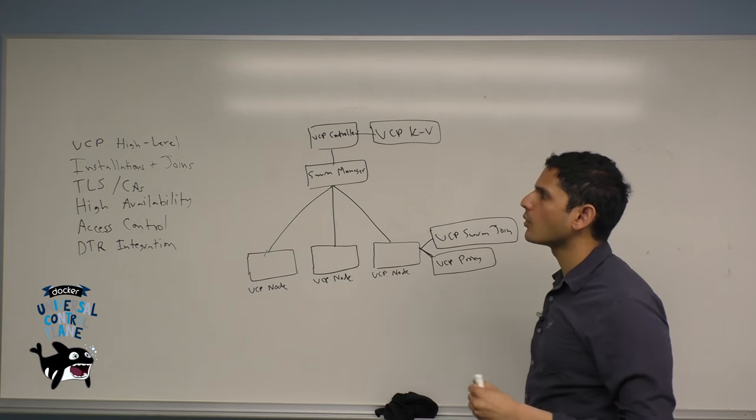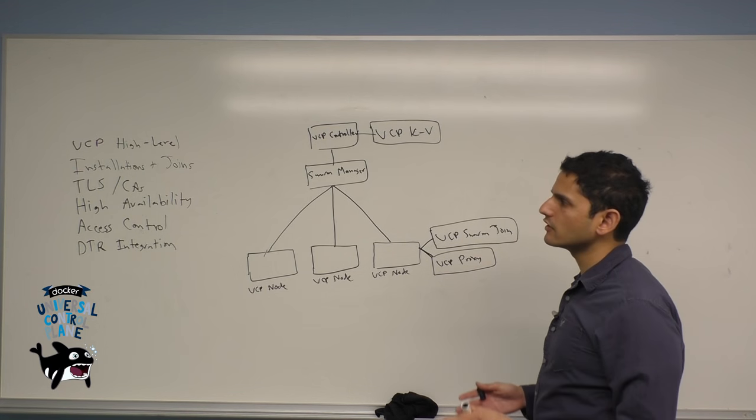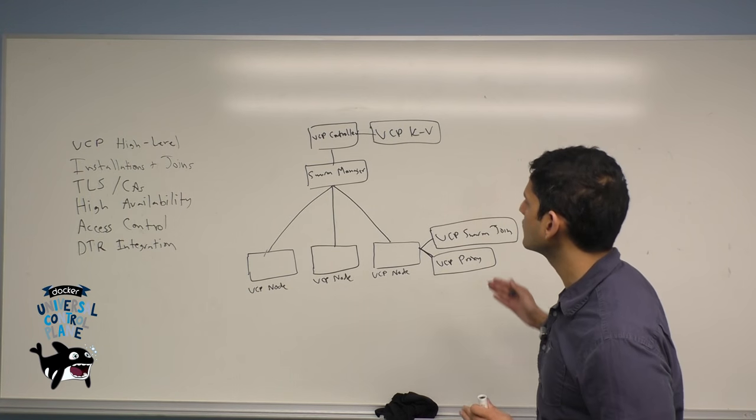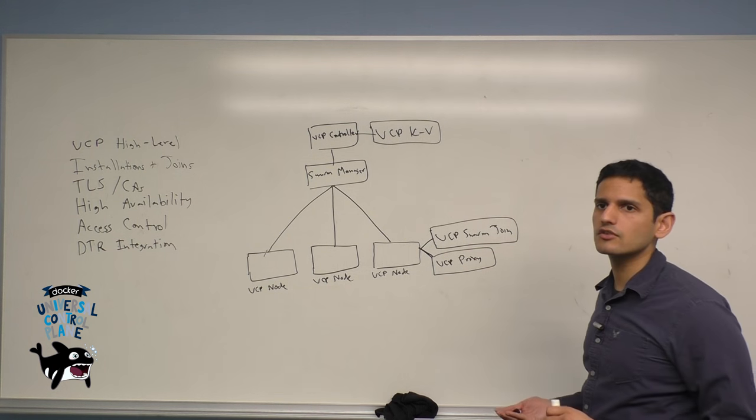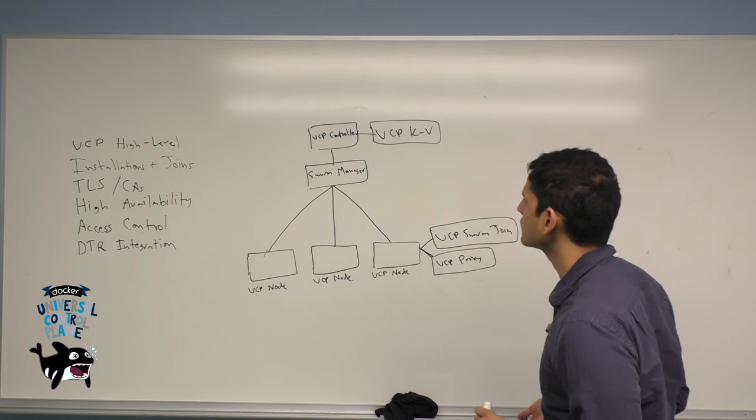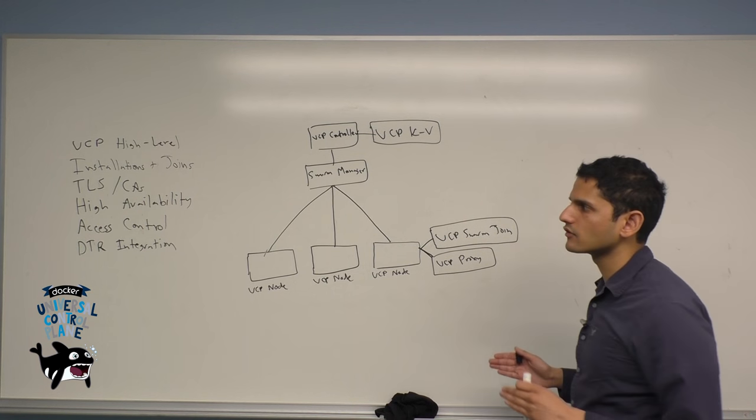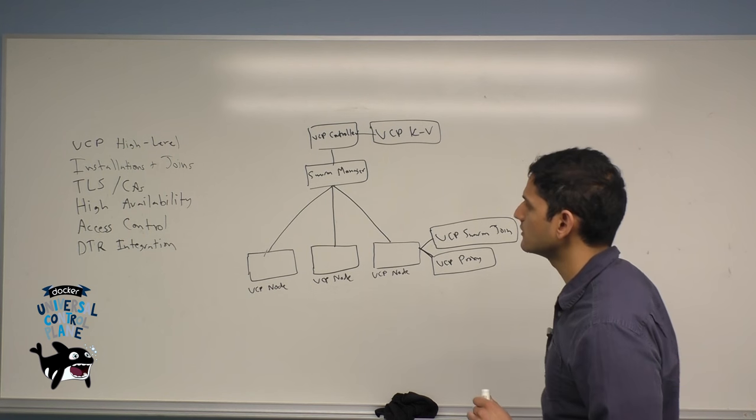The key-value store holds the state of the cluster and allows you to replicate it to a series of replicas of the controller, which we'll talk about more in the high availability section. But this allows you to maintain the state of the cluster, things like where containers are scheduled or your various user account credentials, so that if the controller goes down, they can be backed up on a series of these other controllers and the cluster maintains its viability.